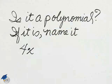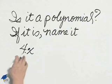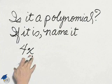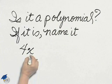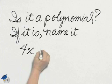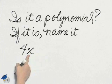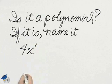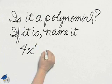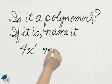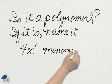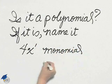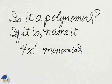Is it a polynomial? If it is, name it. The idea of polynomial has to do with the number of letters, and the exponent tells the number of letters. This is a polynomial because the exponent on the x is the number 1. We say it is a monomial — mono meaning 1, as in one tone or monotonous.